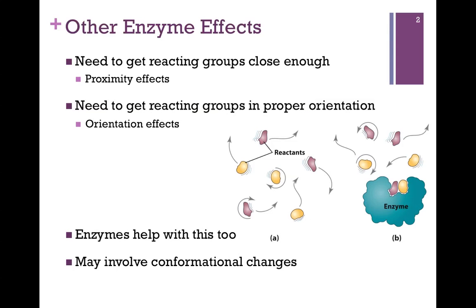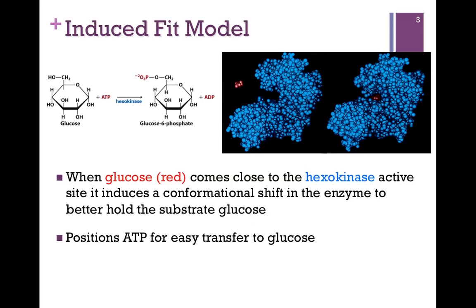This often involves conformational changes, and that's very well illustrated in the case of hexokinase — an enzyme that catalyzes the transfer of a phosphate from ATP to glucose to form glucose-6-phosphate, the first reaction in glycolysis. In the space-filling model of hexokinase in blue, you can see the active site open, ready to receive the substrate glucose in red. Once it binds that substrate, there's a conformational change — the enzyme closes down over the substrate. This is called the induced fit model, and it helps position ATP for easy transfer of the phosphate group to glucose.